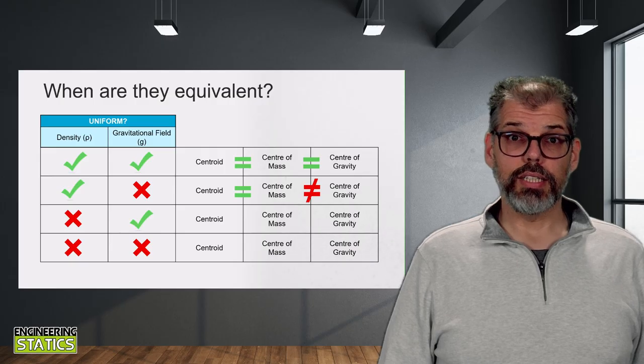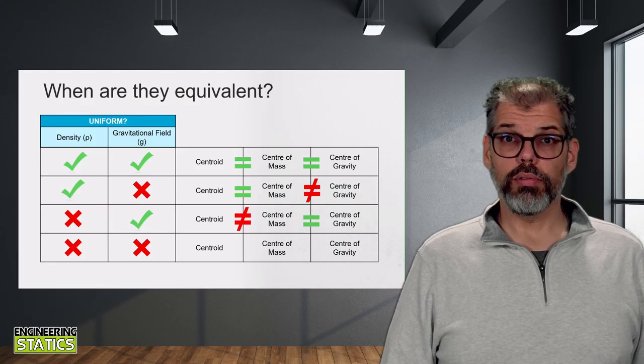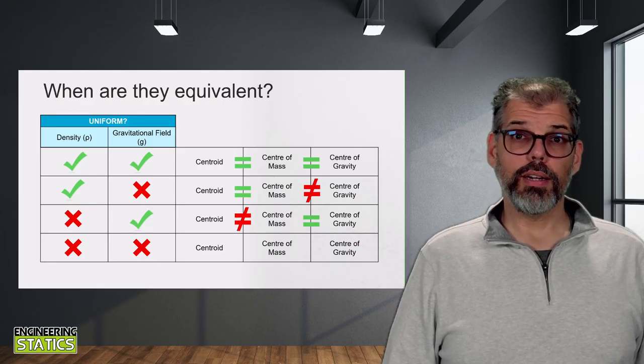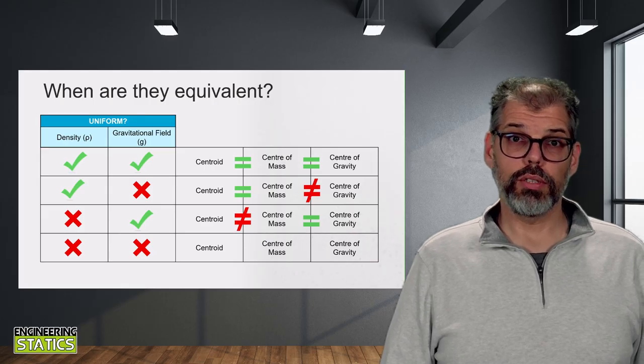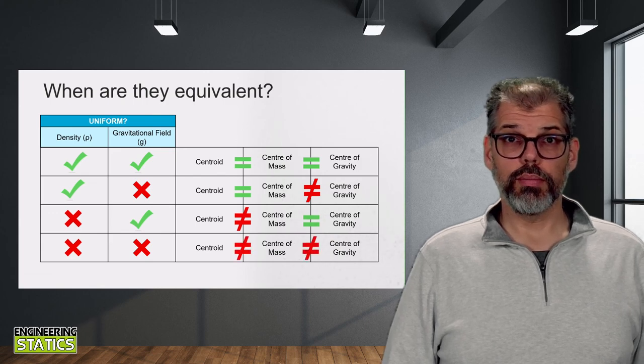And finally, when neither the density nor the gravitational field can be approximated as uniform over the domain of the body, none of these centers are equivalent. I hope that gives you some insight into these different representations of the center of a body. Don't get too overwhelmed by all the equations. Rather, try to think about those subtle differences between them. You will see the equations can be considered to be the same general set of equations with different assumptions applied, which changes that weighting average. But they are all simply average positions within a body.